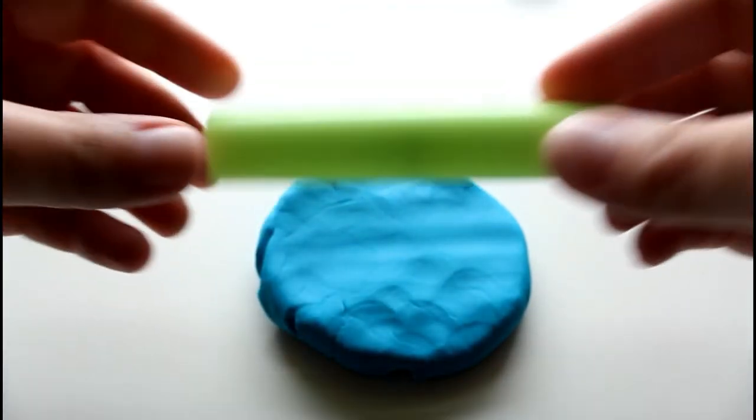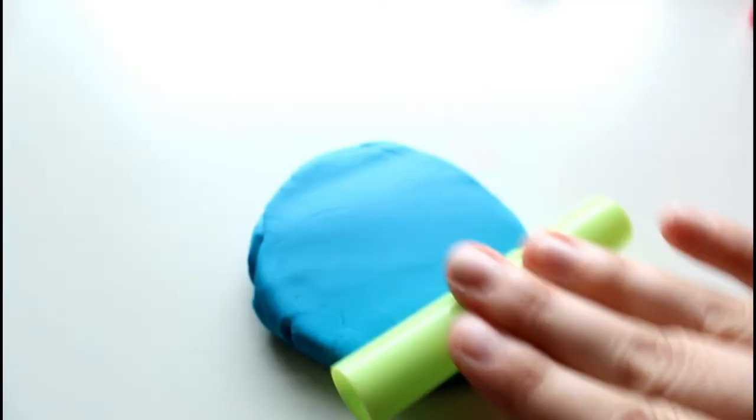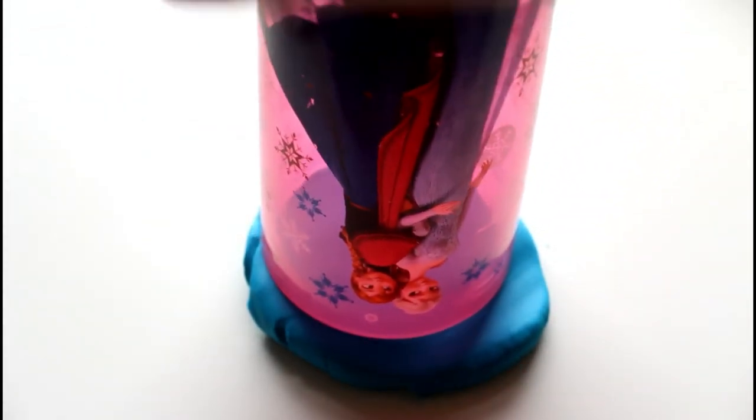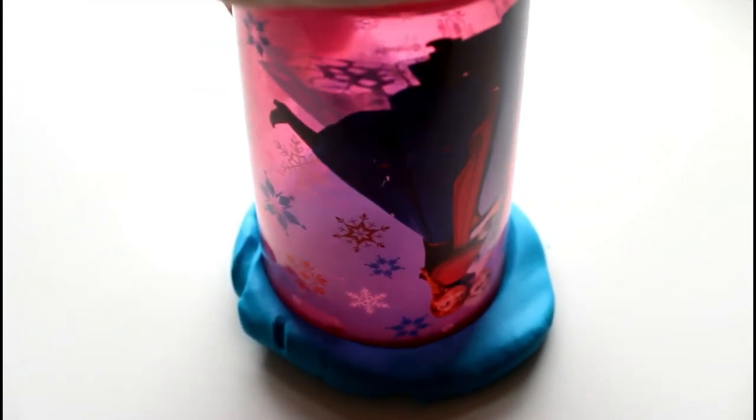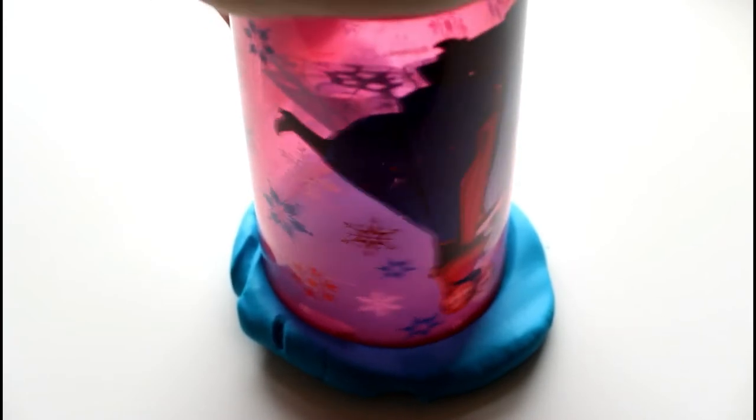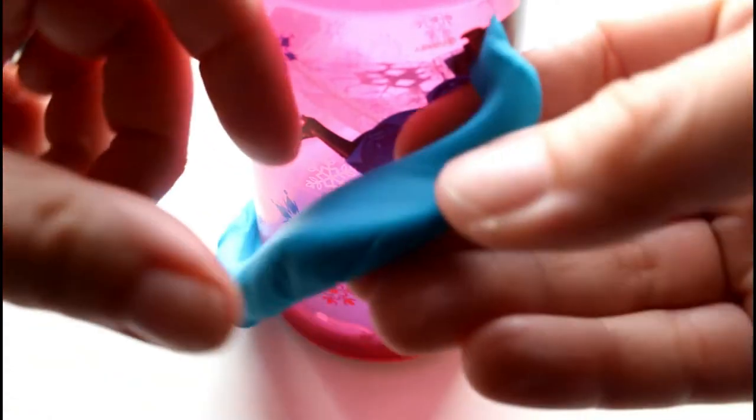Then we're going to take our Disney cup with Elsa and Anna on it and press it down to make our first layer of this beautiful play-doh cake with the rainbow insides. Pull all this extra off, put that to the side, and there we have our first layer.